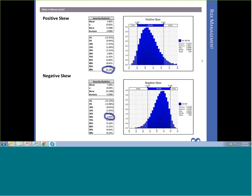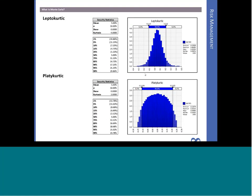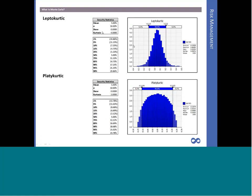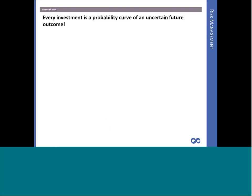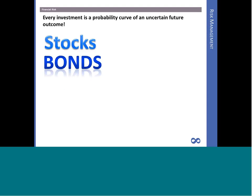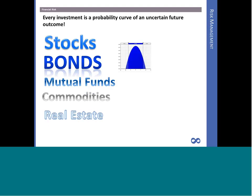Regarding kurtosis: a leptokurtic distribution has kurtosis greater than 3, appearing more peaked than normal. A platykurtic distribution has kurtosis less than 3 — it's rounder with fatter tails. These are the moments of distribution I want to control when defining investments. I'd argue every investment — stocks, bonds, mutual funds, commodities, real estate — can be described by probability curves using these moments of distribution. They may have different shapes, including discrete distributions, but all investments can be described by a probability curve of potential outcomes.